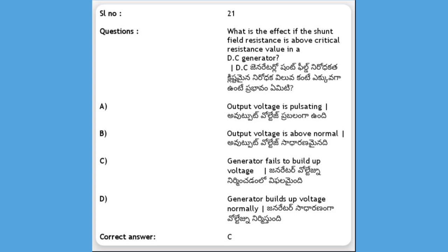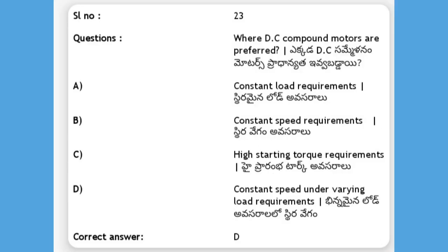Where are DC compound motors preferred? Options: constant load requirements, constant speed requirements, high starting torque requirements, constant speed under varying load requirements. The answer is D, constant speed under varying load requirements.